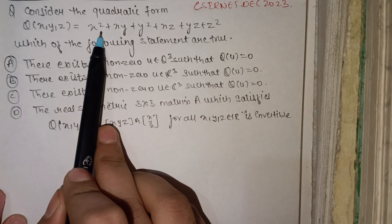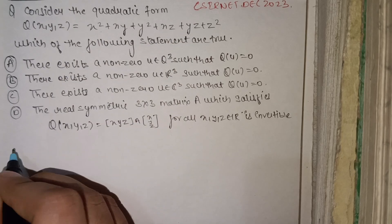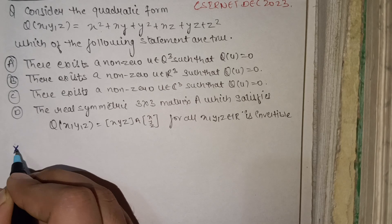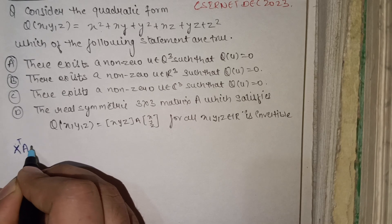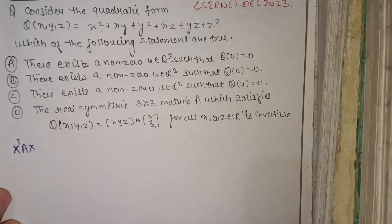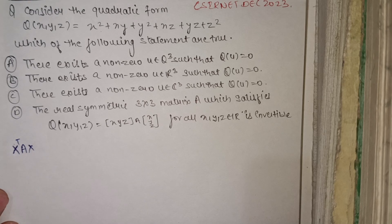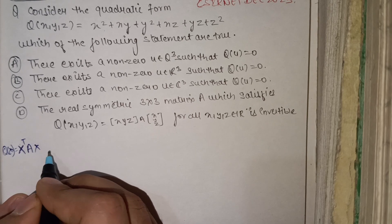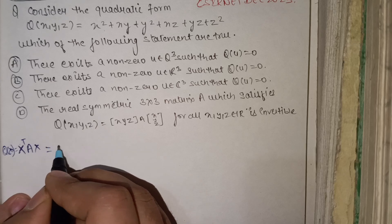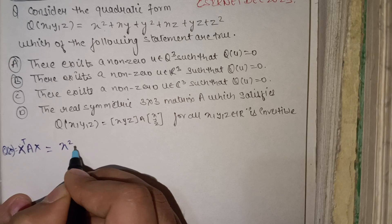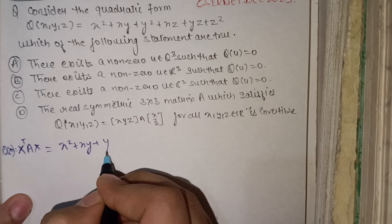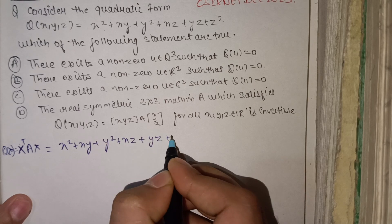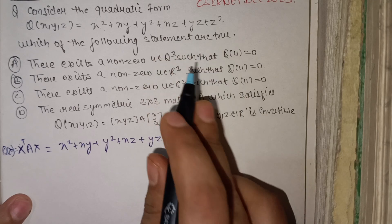First, let's make the matrix of this quadratic form. In real space, a quadratic form is Q(x) = xᵀAx. So the quadratic form here is Q(x,y,z) = x² + xy + y² + xz + yz + z².